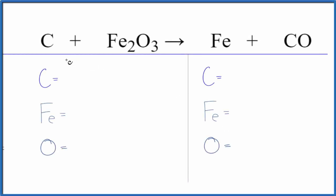In this video we'll write the balanced equation for C plus Fe₂O₃. So to balance the equation, let's count the atoms up: one carbon, two iron atoms, three oxygen atoms. Product side we have one carbon, one iron, and one oxygen.